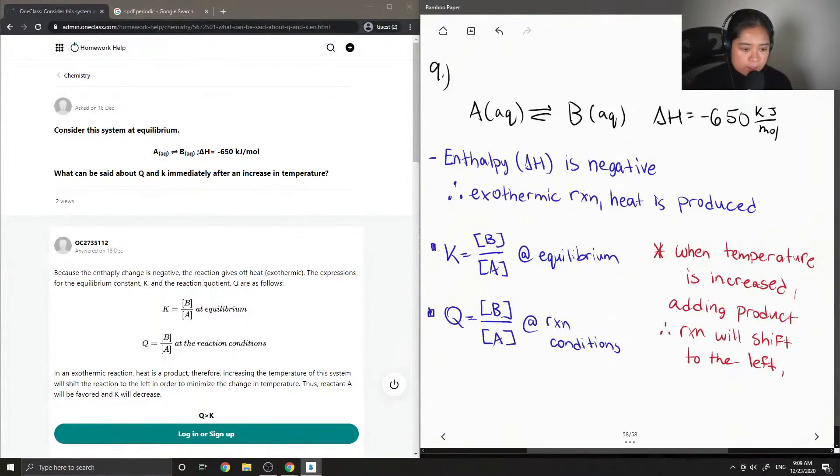So when the reaction shifts to the left, then the value of K decreases. Okay, so A is favored. And the value of Q will be greater than K.